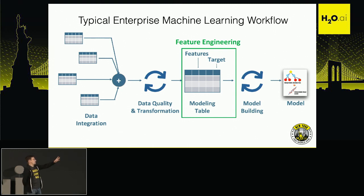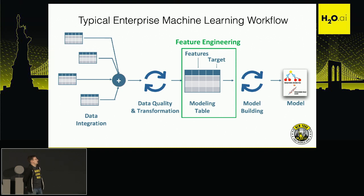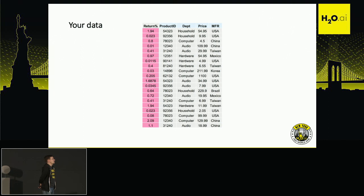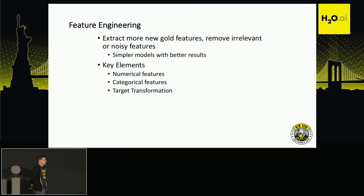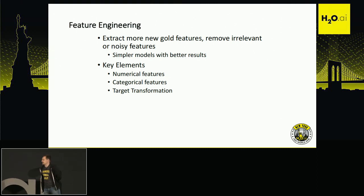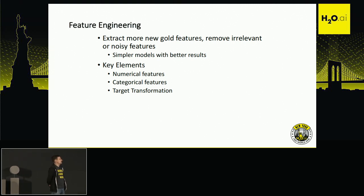In a typical machine learning workflow, you have data stored in some database. Feature engineering happens when you already have features in a nice tabular format — for example, you have a target, some categorical features, and some numerical ones. What you're going to do is represent these features in a clean form to help your model approximate better and arrive at a better solution.